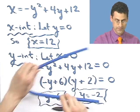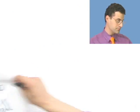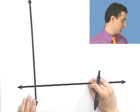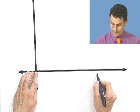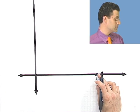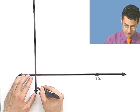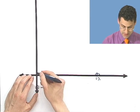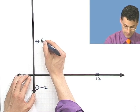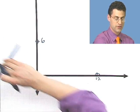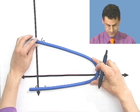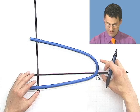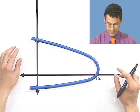Since there's a y squared, this is a parabola that opens either left or right. We have an x-intercept at 12 and y-intercepts at negative 2 and 6. Plotting these points, the parabola passes through x equals 12 on the x-axis and through y equals negative 2 and y equals 6 on the y-axis. From these intercepts you can see the parabola opens to the left and sketch the curve accurately.